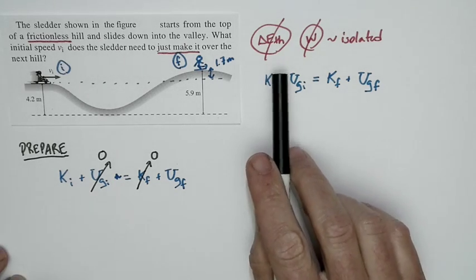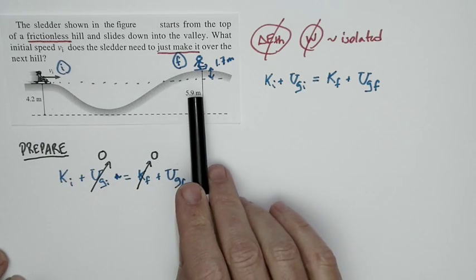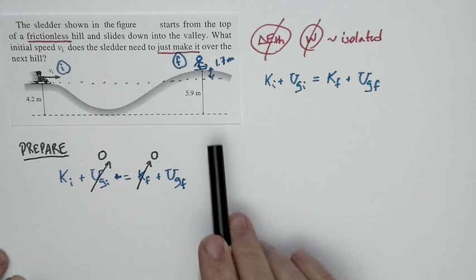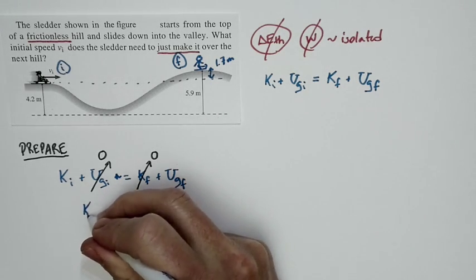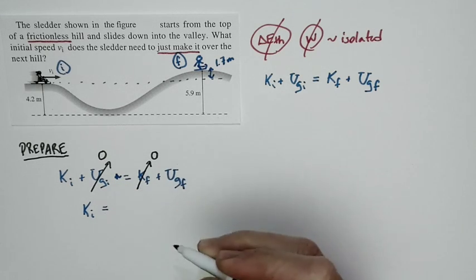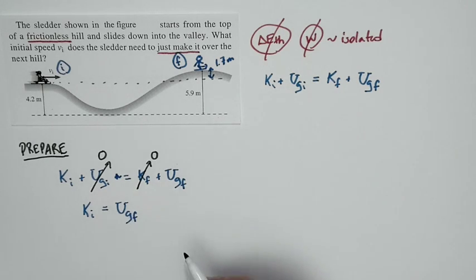So it's an isolated system. There's no friction. The initial potential energy we can take is zero. The final kinetic energy we can take is zero. And so our net result is that our basic conservation of energy relationship just turns into this. The initial kinetic energy is equal to the final gravitational potential energy.